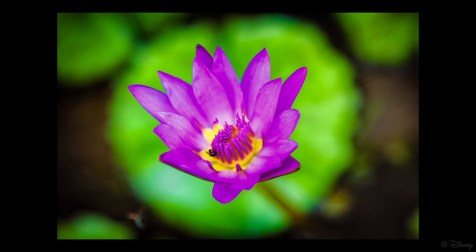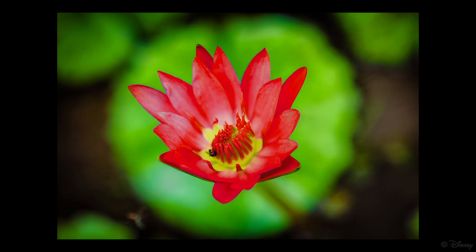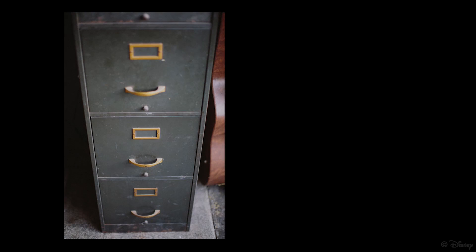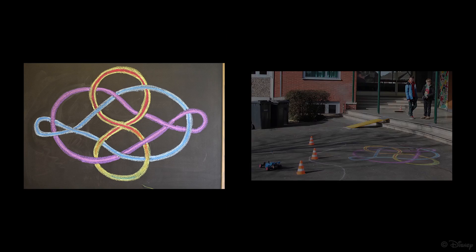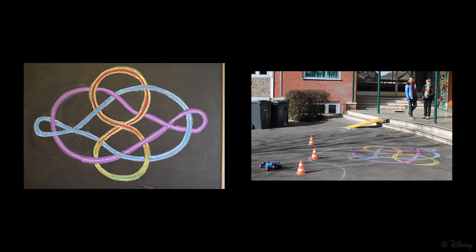Here, we demonstrate a realistic color change of a flower. Here is an example where we overlay a texture on a single layer, in this case to give the cupboard a worn-out appearance. The pattern of the chalk seamlessly integrates with the scene on the right.